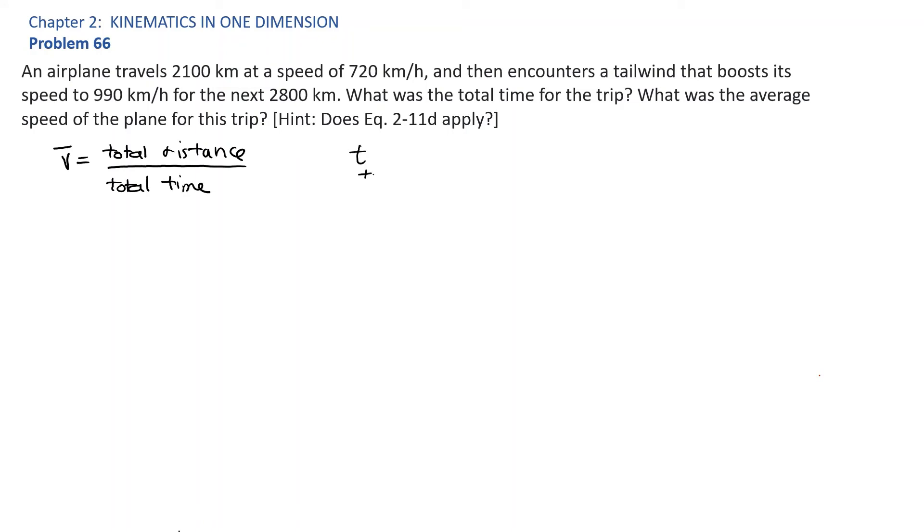Total time from the previous part is equal to 5.74 hours, and the total distance is equal to delta x1 plus delta x2, or 2100 plus 2800 kilometers, which is 4900 kilometers total.